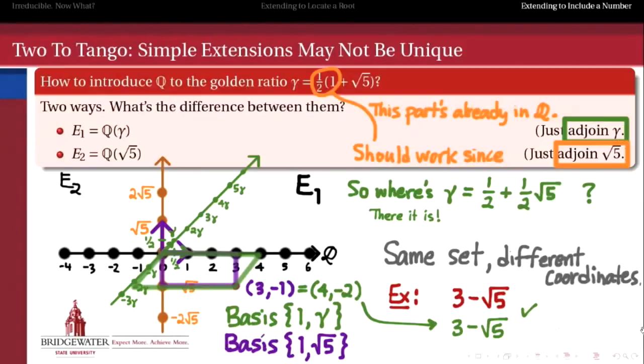It's just that we use different coordinates to express that membership in E1 and E2. But the important part is that the set itself is still the same. Both of these bases, the green basis and the purple basis, are spanning the same set, which is our simple extension of Q by the golden ratio.